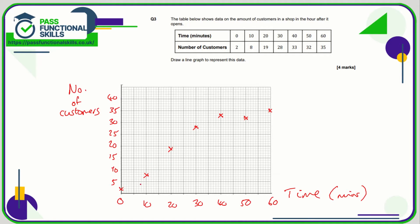So we've drawn all the points. Now all we need to do is draw a line from point to point. Again, using a ruler would be better, of course. And there is our completed line graph.